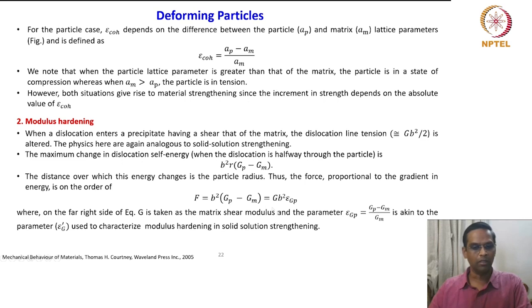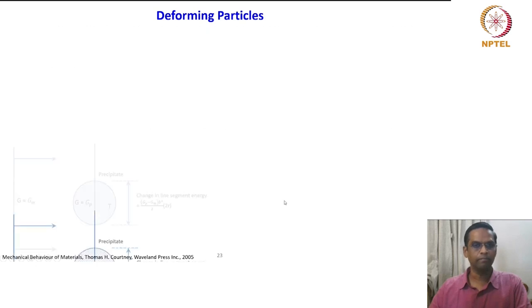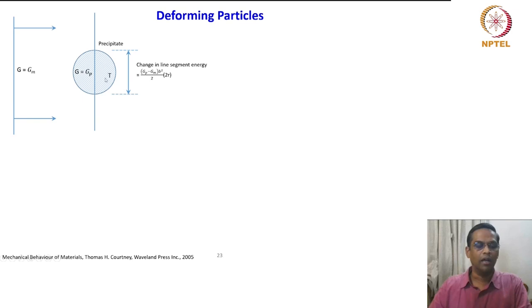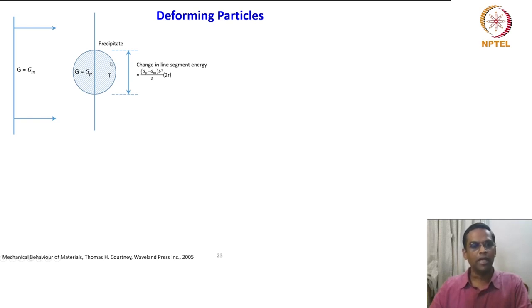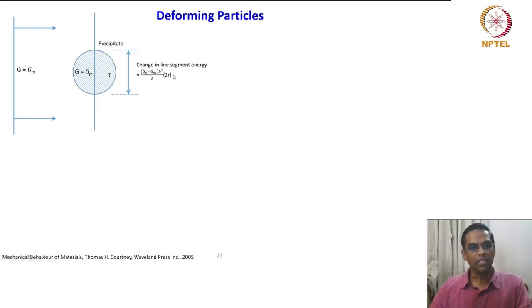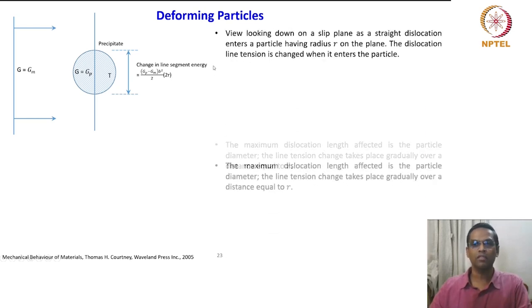These are all similar ideas already familiar from modulus strengthening. This schematic shows the deformable nature: the dislocation line is moving in the matrix, it enters the precipitate, and the line tension of the dislocation is altered — reaching its maximum when it has traveled a distance equal to the radius R. The change in the line segment energy is given by (G_p minus G_m) times b² / 2 times 2R, where 2R is the maximum distance it can cross.